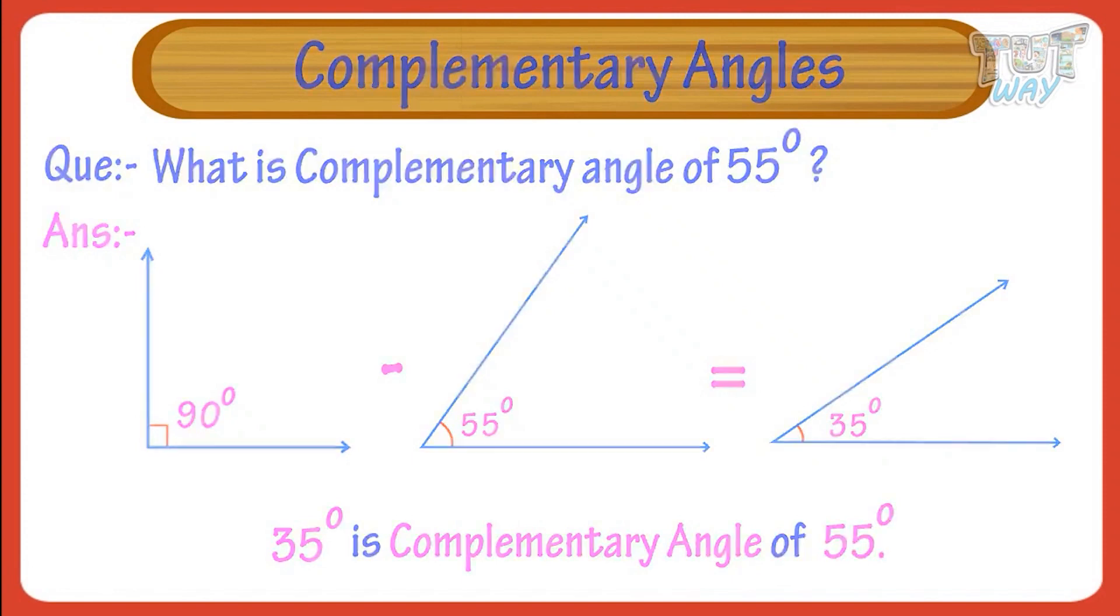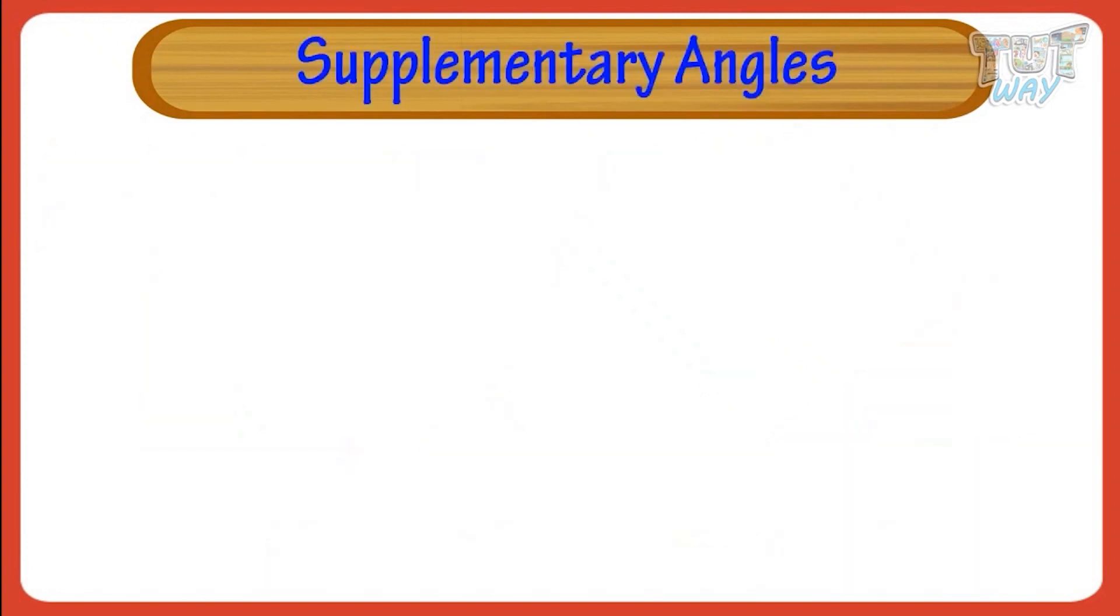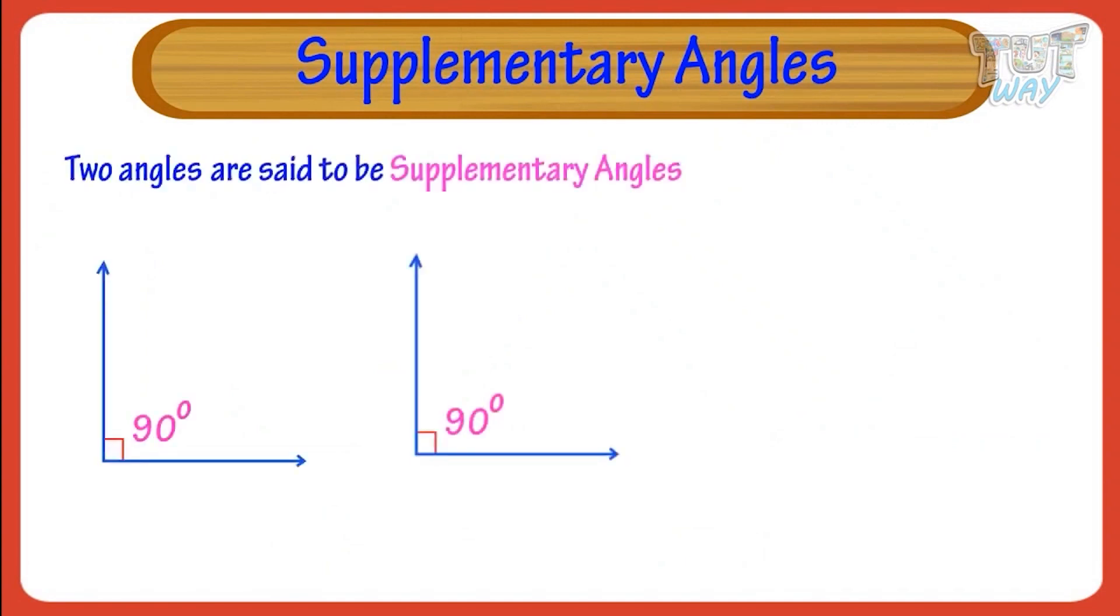Now, let's learn what are supplementary angles. Two angles are said to be supplementary angles if their sum is 180 degrees. Let's take an example.